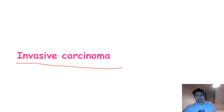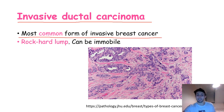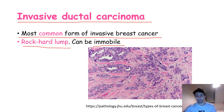Now for invasive carcinomas — these are carcinomas that have broken through the basement membrane and carry a higher risk of metastasizing. The first is invasive ductal carcinoma, the most common form of invasive breast cancer. It usually presents as a rock-hard lump on the breast, and if it has invaded nearby tissue it can be immobile. Histologically, it shows a very disorganized mass of cells invading nearby tissues.